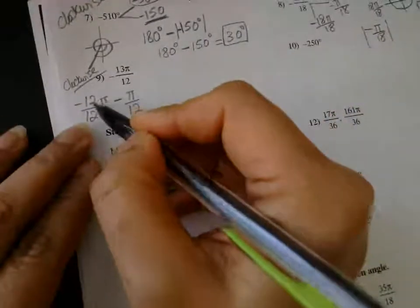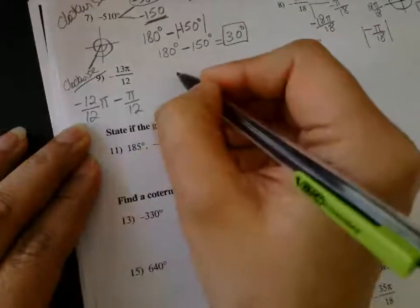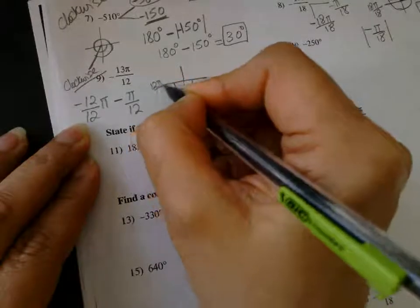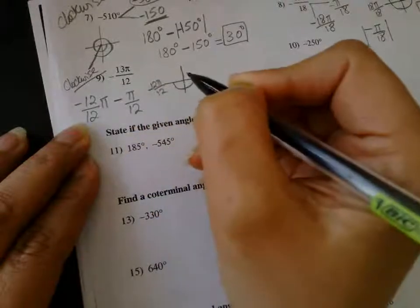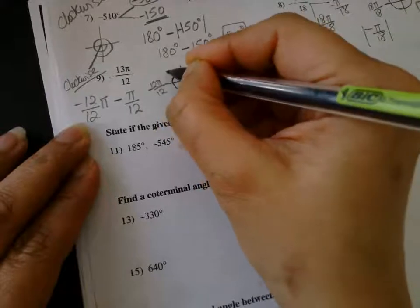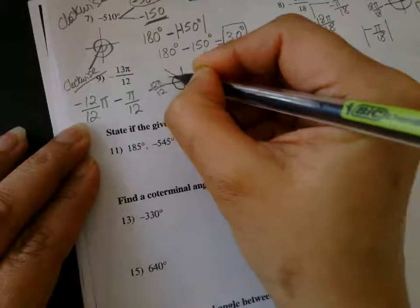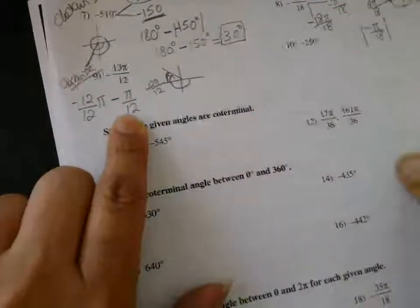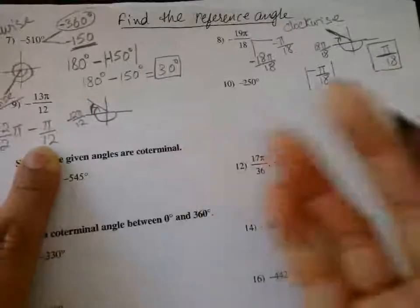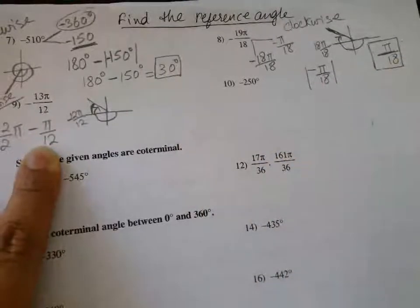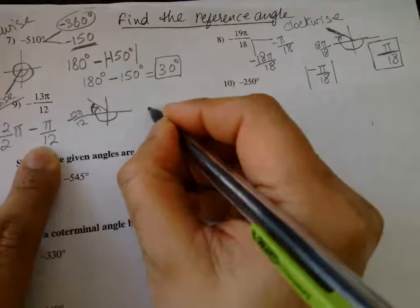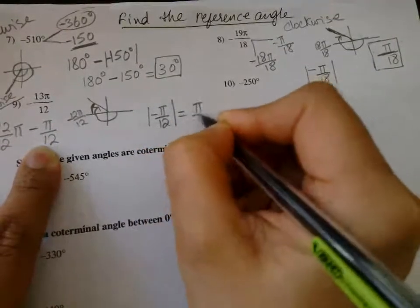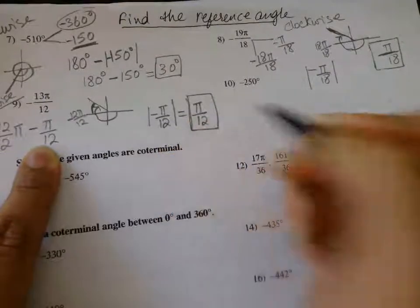Same case here for negative 13π/12: 12π/12 is π on the unit circle, coming clockwise. Then π/12 more — that is the terminal angle. I need to find the absolute value because the reference angle has to be positive. So the absolute value of negative π/12 is π/12. That is my reference angle.